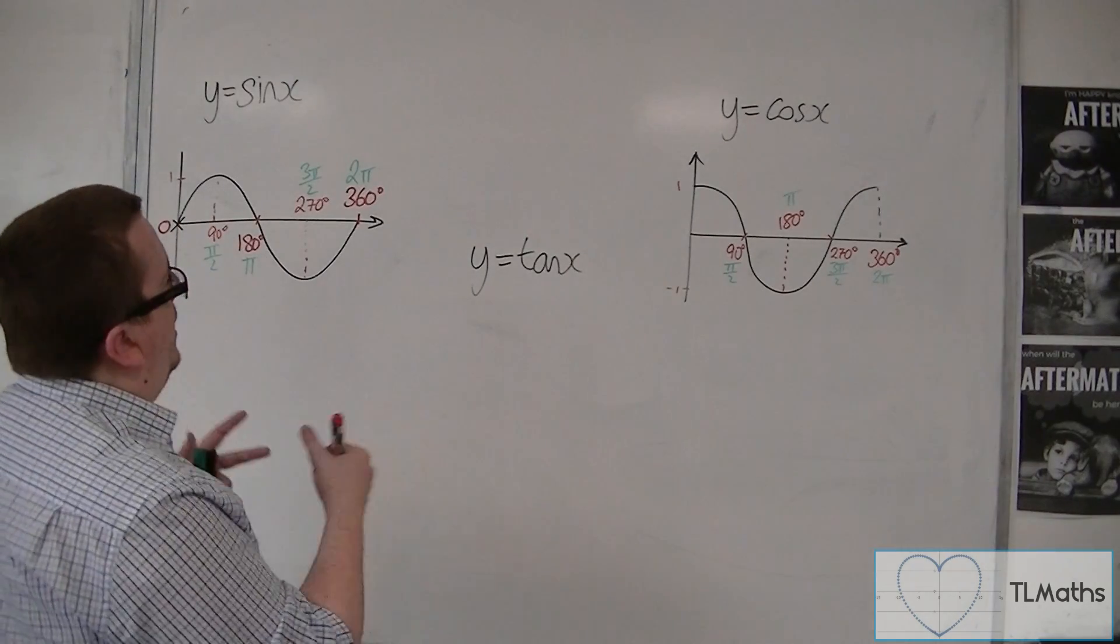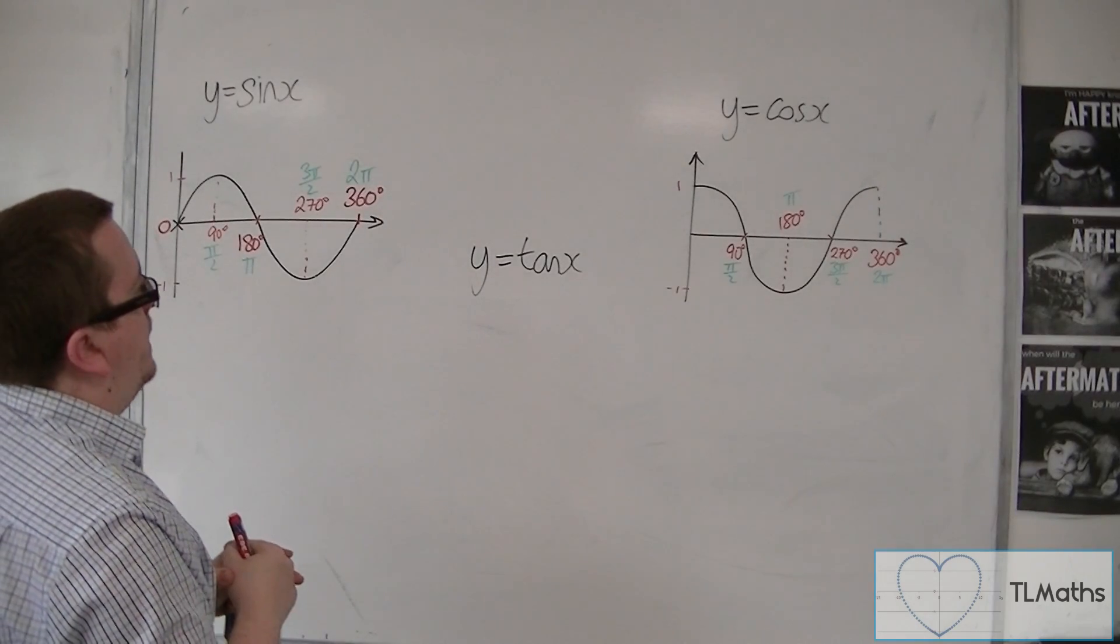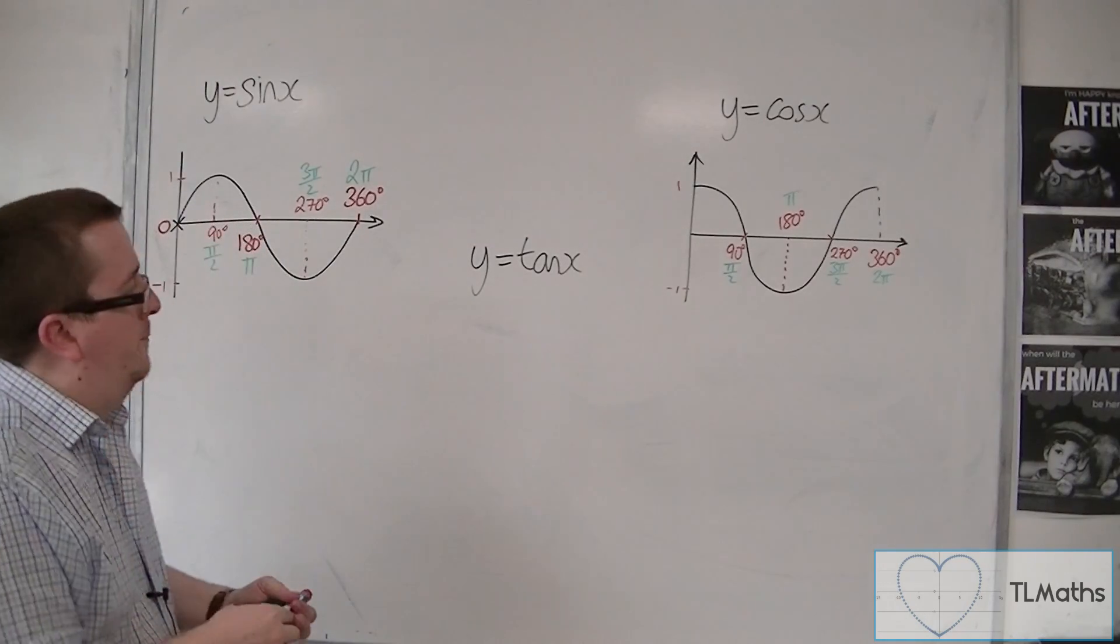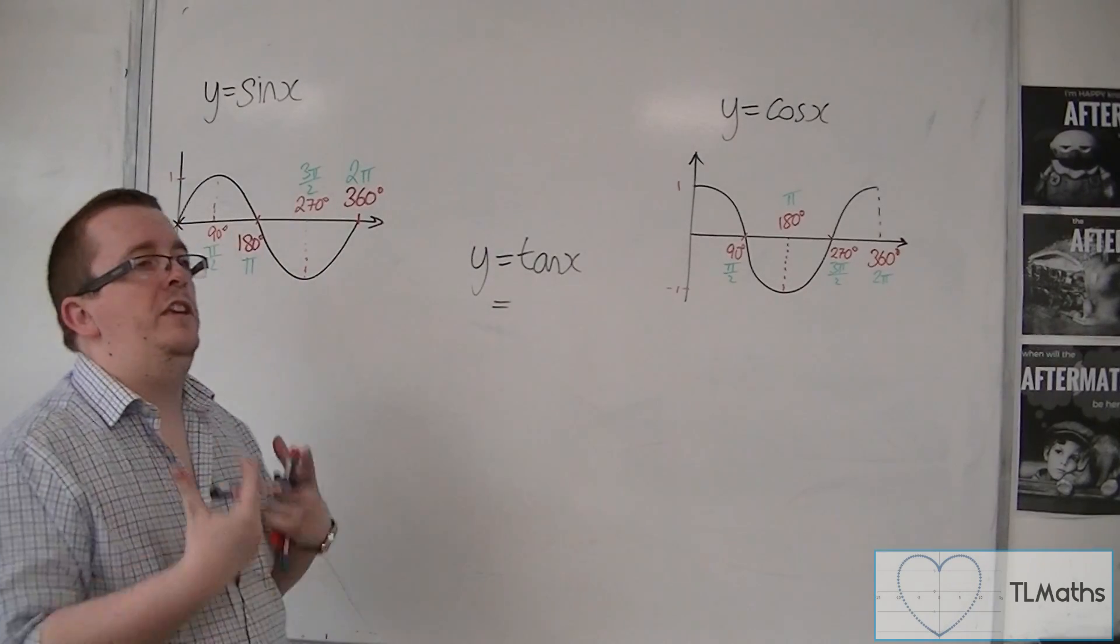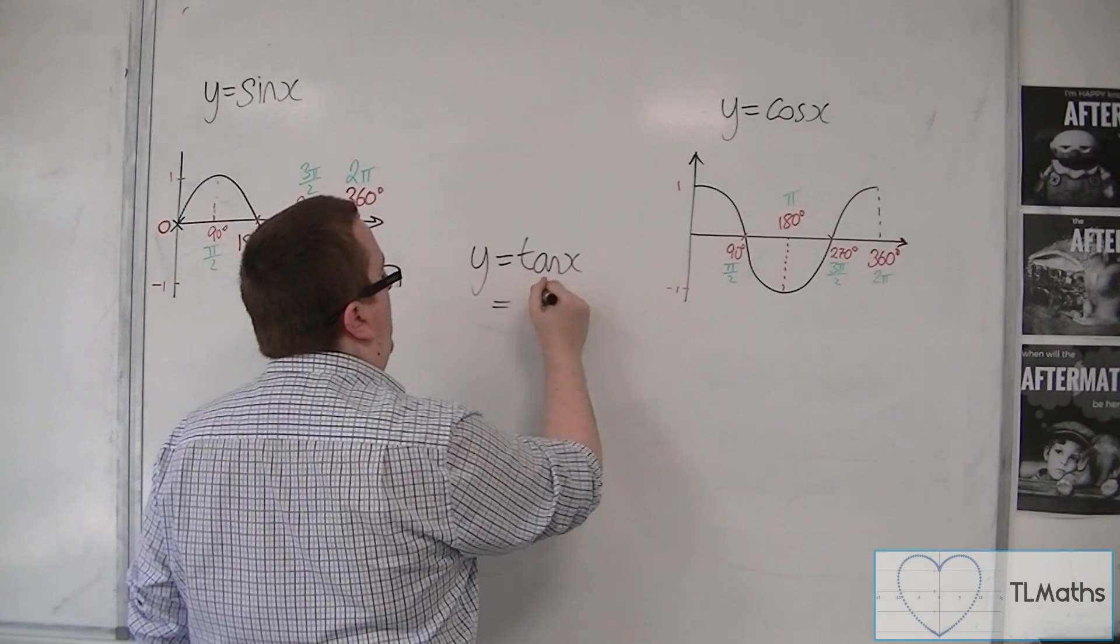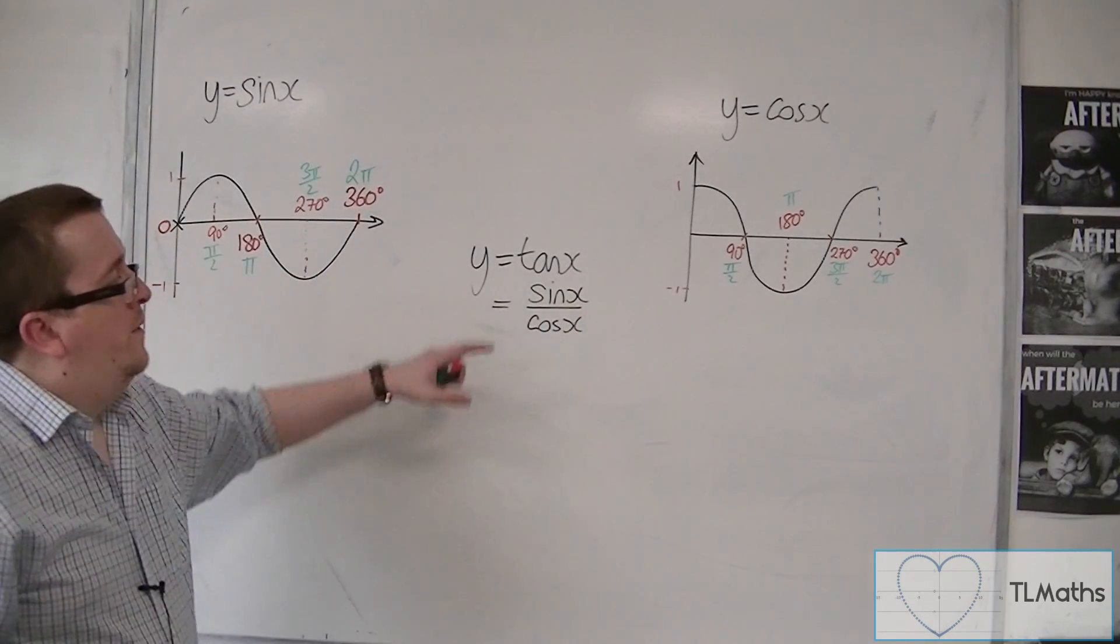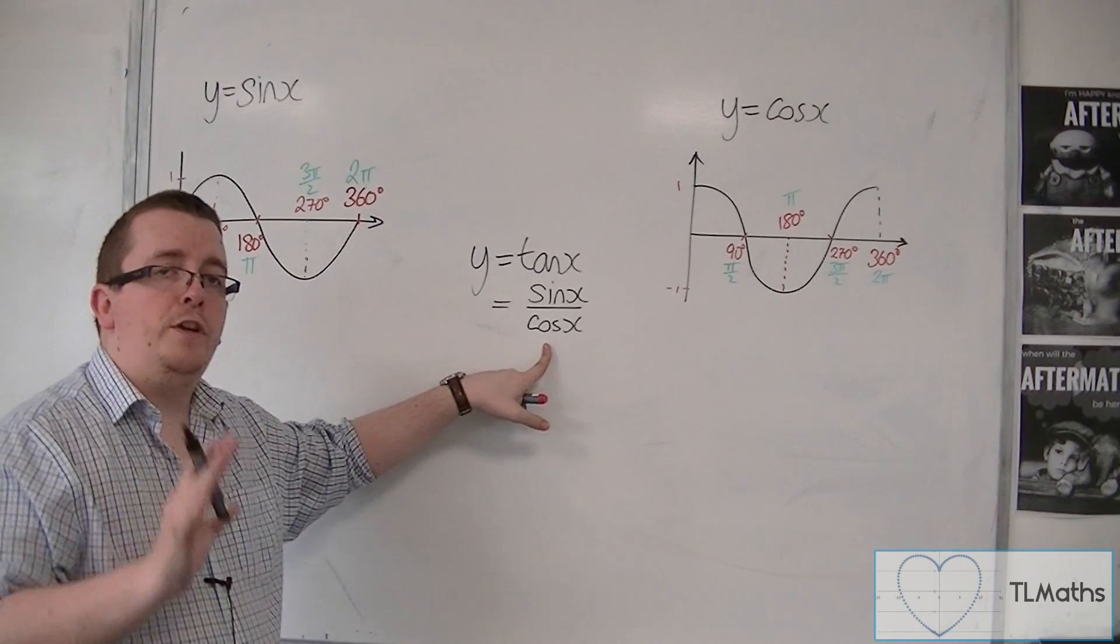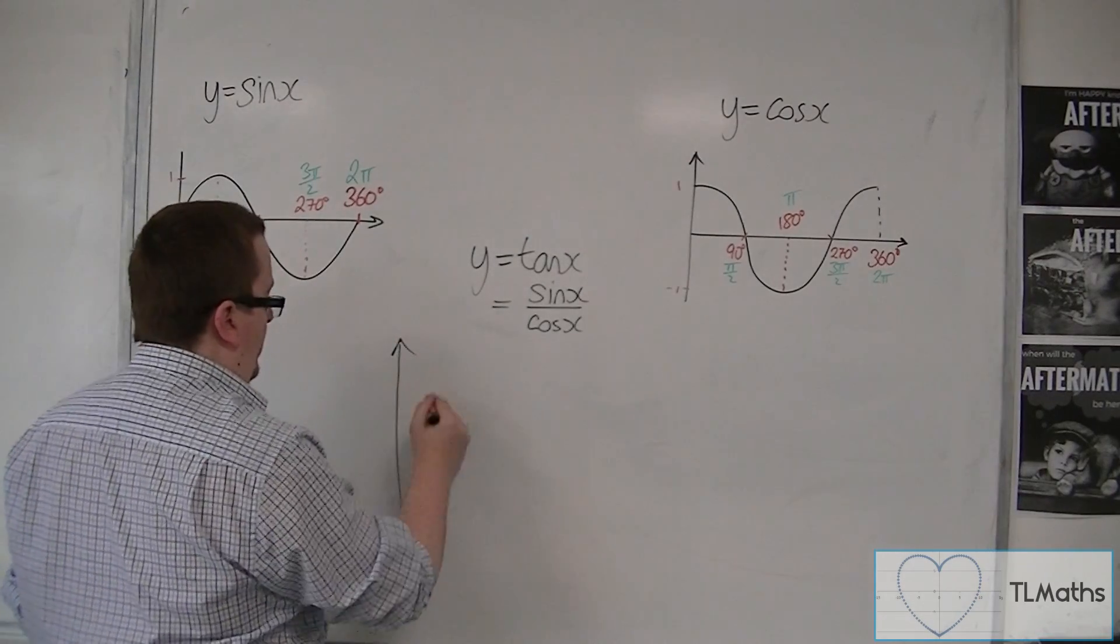That leaves us with y equals tan x. How is that related to sin x and cos x? In actual fact, one of the trig identities that you need to remember is that tan x is the same as sin x over cos x. This is a very important thing to remember, and we can use that fact to help us sketch tan.